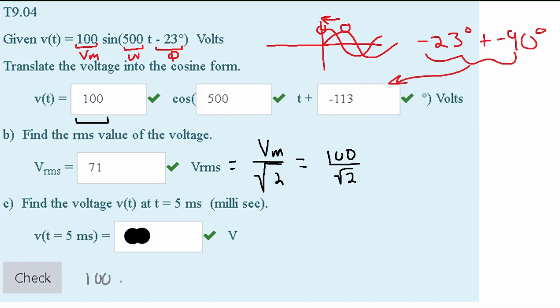Our Vmax is 100. We then have a cosine with our omega inside. And we know that our omega is 500. Now our T is 5. However, it's in milliseconds.